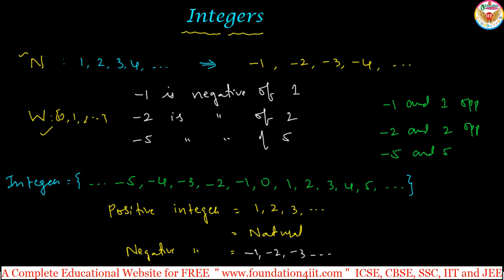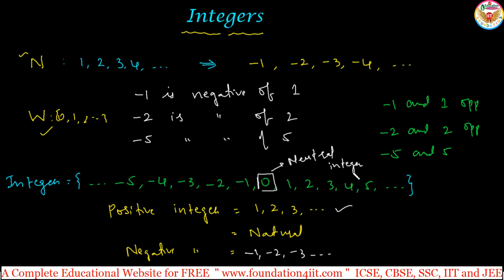One important thing to remember is about 0. Zero is neither positive nor negative — it is a neutral integer. Do not get confused: positive integers are 1, 2, 3, 4, and so on; negative integers are minus 1, minus 2, minus 3, and so on; and 0 is neutral. Zero is neither positive nor negative — it is only a neutral integer.